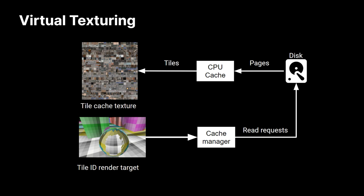Here is an overview of the flow. Every frame we render to our tile ID render target and copy this back. This gets processed by the cache manager, which translates it into read requests to disk. From disk we read pages — which are larger than tiles for efficient throughput — and these pages get stored in a CPU cache that you can configure. Out of that CPU cache we extract tiles that are then copied to the GPU cache, where they can actually be used for rendering.